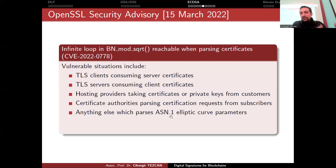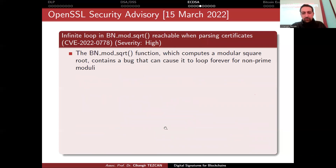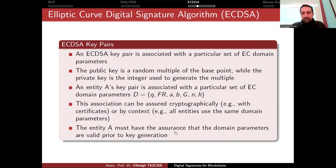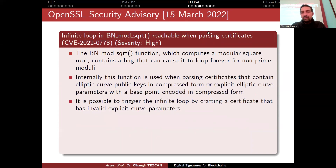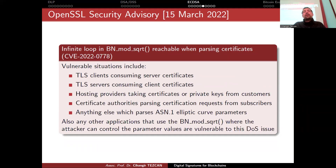ASN.1 is a method of representing parameters to provide interoperability between different languages. Any application using BN_mod_sqrt where an attacker can control parameter values is vulnerable to this denial of service. This standard text saying you must verify domain parameters dates from the 1990s, yet in March 2022 we still observe bugs that get this wrong. Choosing an elliptic curve and verifying those choices are correct — and implementing it correctly — remain critically important.